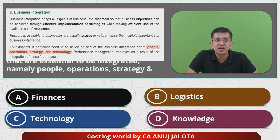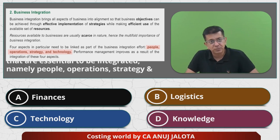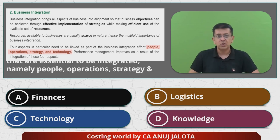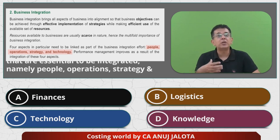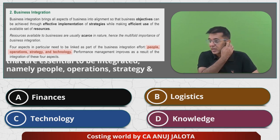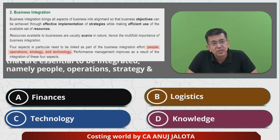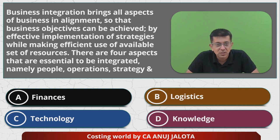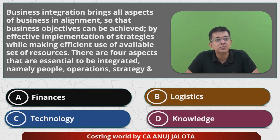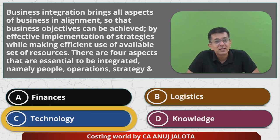So there are four things that have to be integrated. Three of them were given in the question — people, operations, and strategy. Operations means your day-to-day activities, and they have to be done in the same manner. The last one is obviously technology. So out of the four options, the answer should be C — that is technology. That is the correct one.